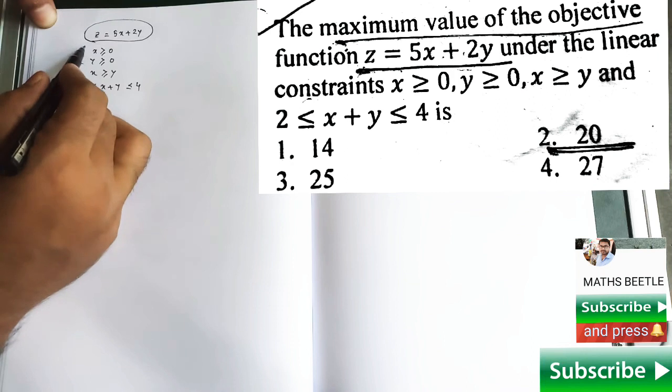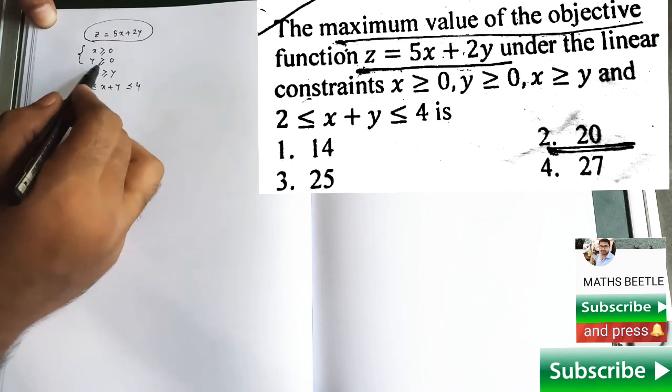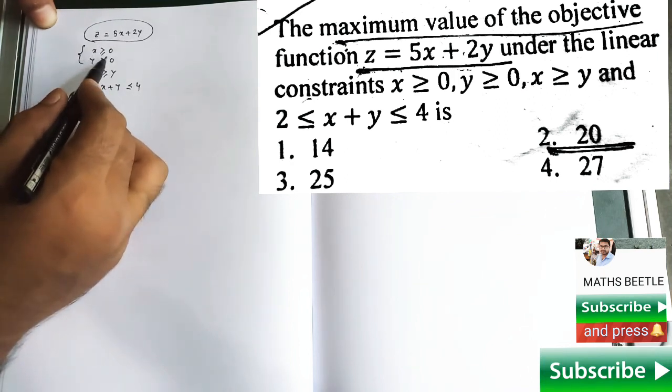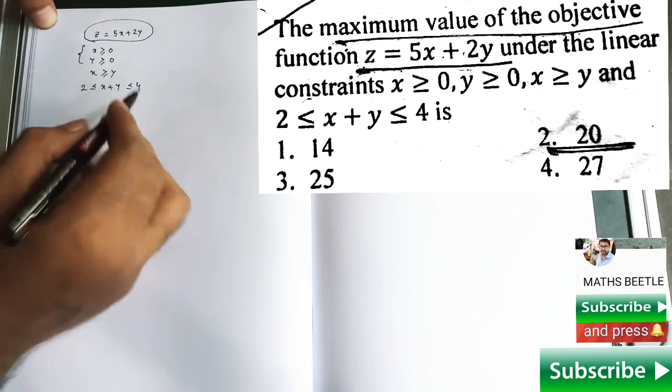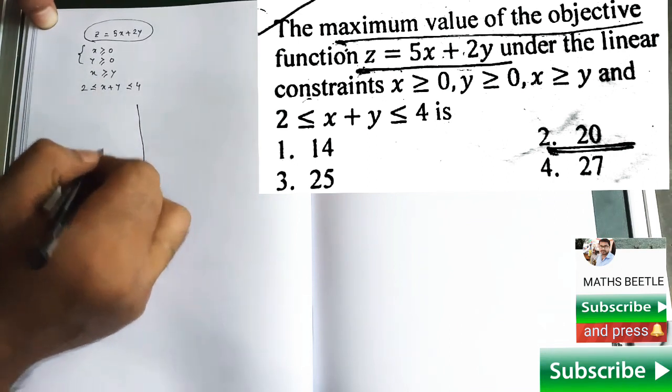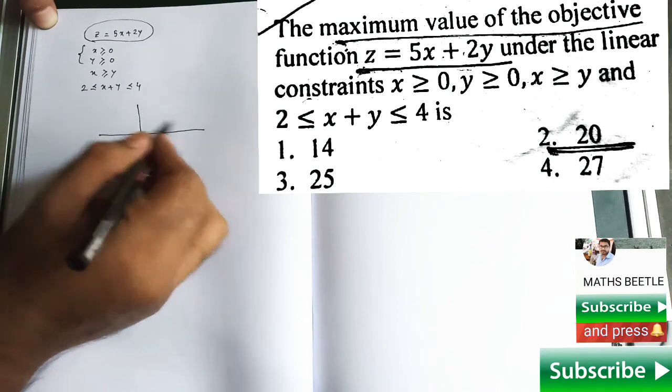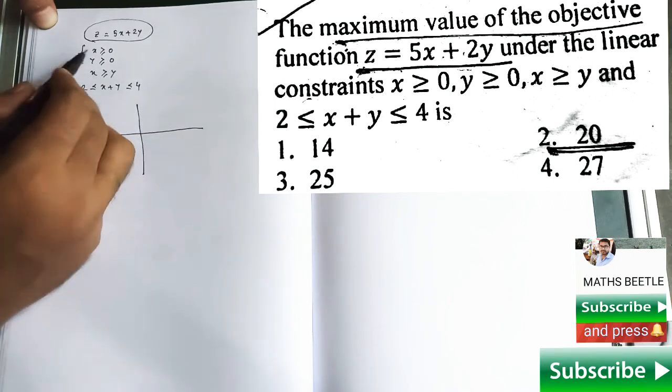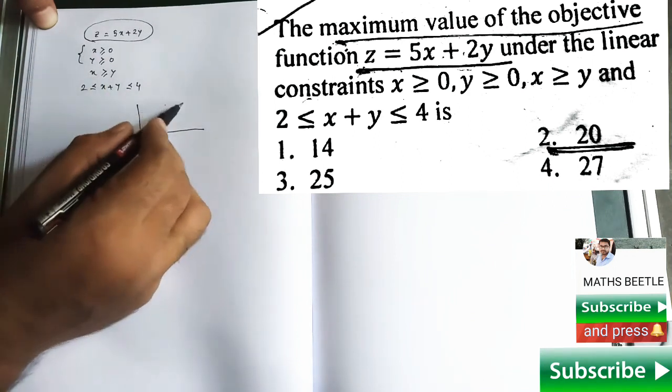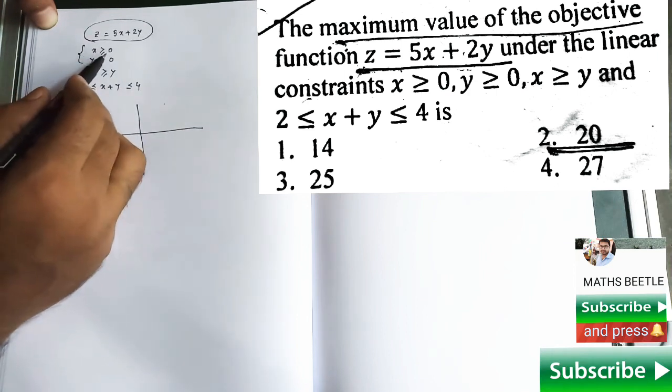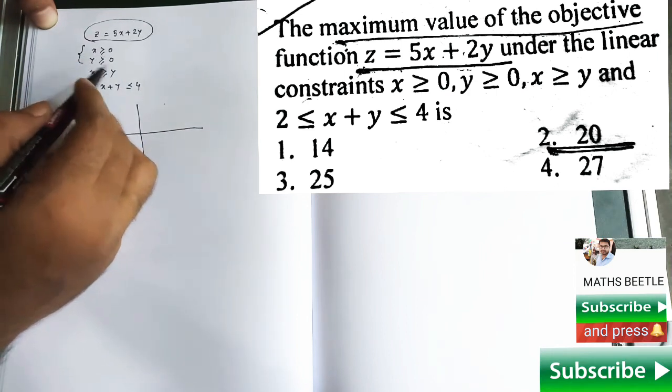Look at these two constraints carefully. They are implying the first coordinate. So if you try to draw the graph of the corresponding inequalities, then these two will give this first coordinate: x greater than or equal to 0 and y greater than or equal to 0.